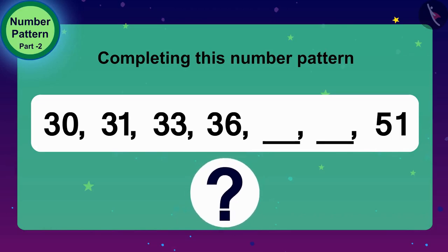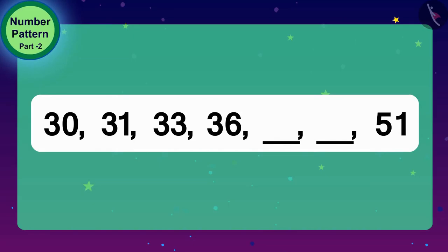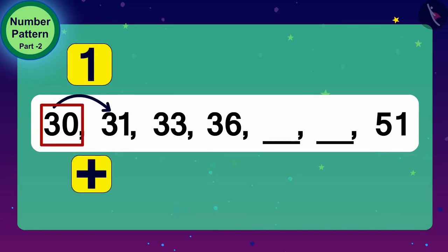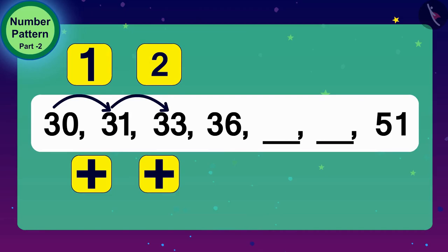Let us find the rule of this number pattern. What would we do if we had to reach from 30 to 31? Exactly, we will add 1 to 30. And what do we have to do to get 33 from 31? Yes, we have to add 2. And finally, if we have to reach 36 from 33, what will we do?